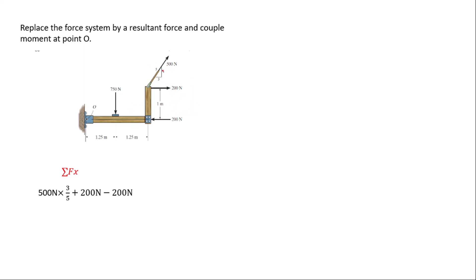So we have 500 newtons times 3/5. Cosine is adjacent over hypotenuse, which gives us 3 over 5, so we get 300 newtons. The two 200 newton forces move in opposite x directions and cancel each other, giving a net x-component of 300 newtons.